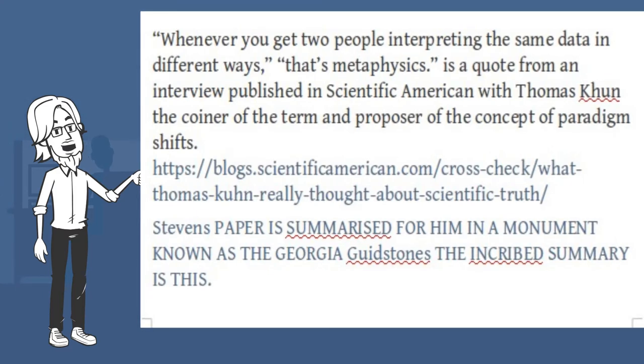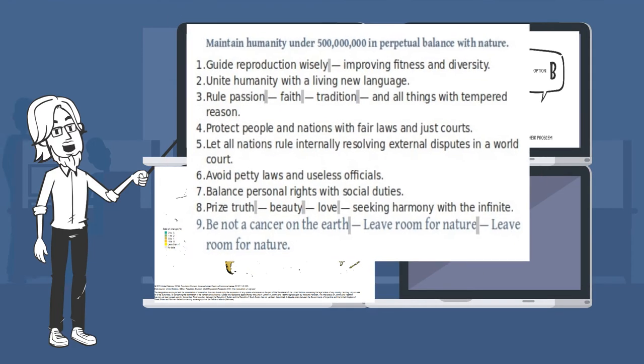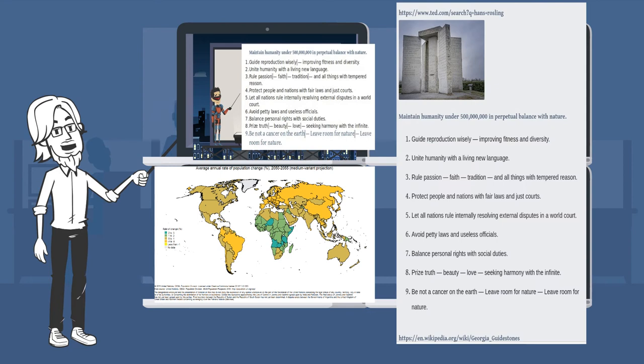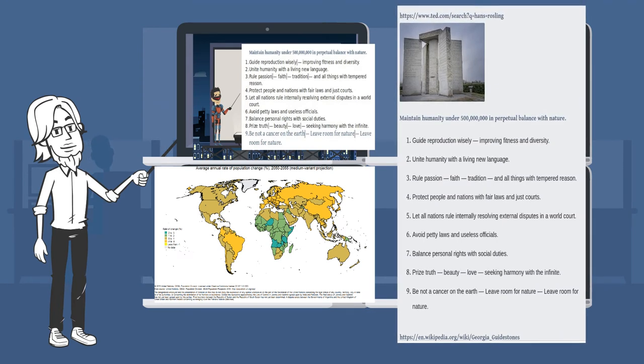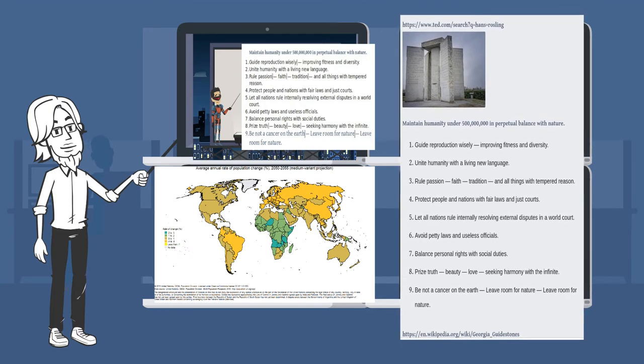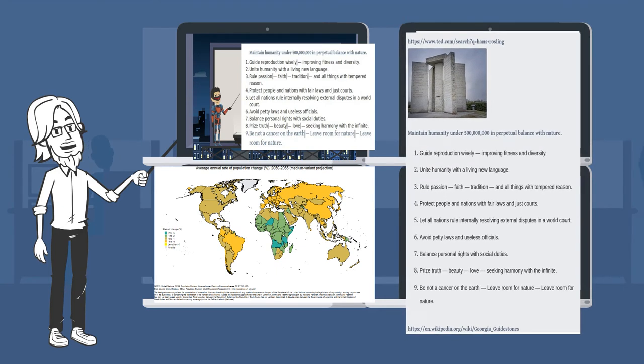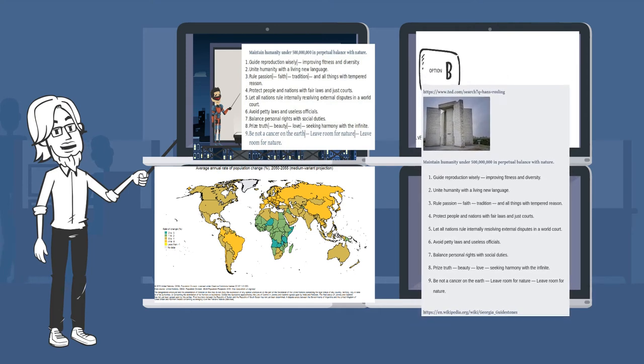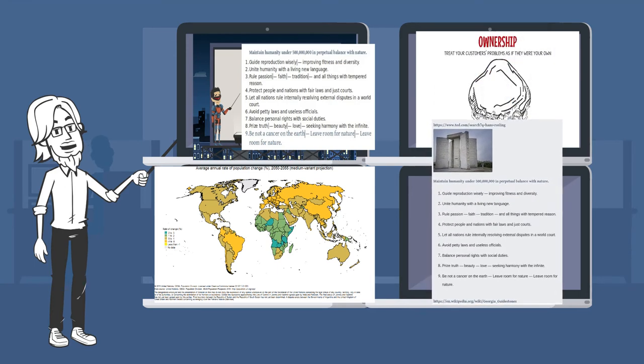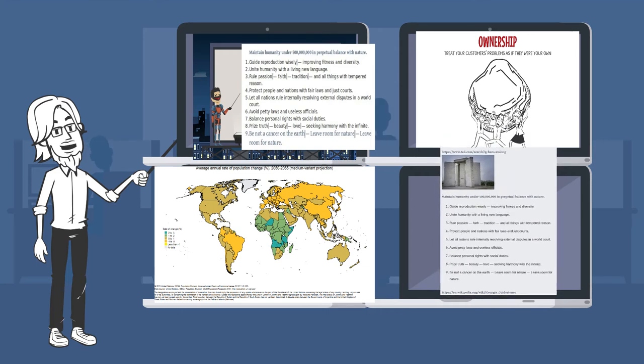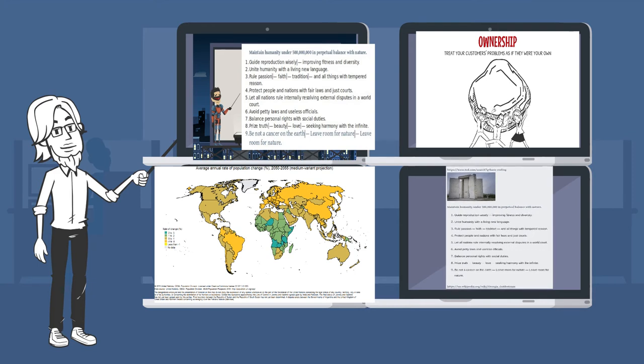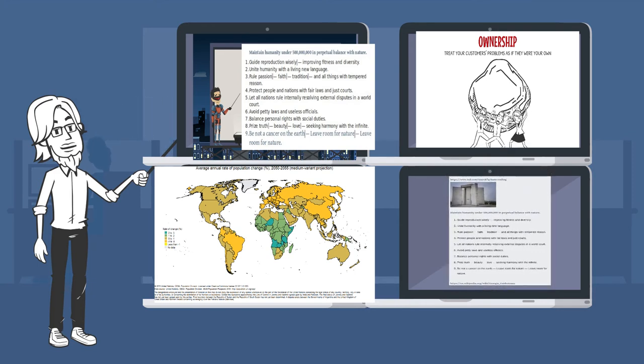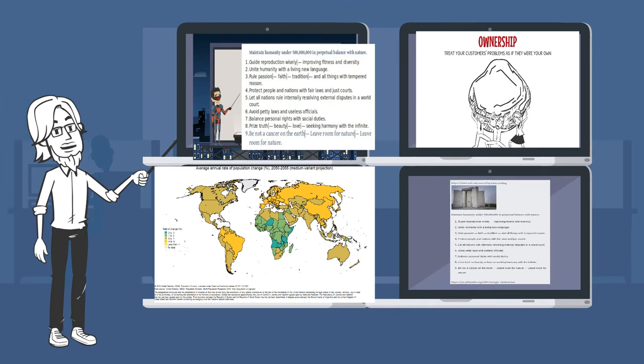Stephen's paper is summarized for him in a monument known as the Georgia Guidestones. The inscribed summary is this: Maintain humanity under 500 million in perpetual balance with nature. 1. Guide reproduction wisely, improving fitness and diversity. 2. Unite humanity with a living new language. 3. Rule passion, faith, tradition, and all things with tempered reason. 4. Protect people and nations with fair laws and just courts. 5. Let all nations rule internally, resolving external disputes in a world court. 6. Avoid petty laws and useless officials. 7. Balance personal rights with social duties. 8. Prize truth, beauty, love, seeking harmony with the infinite. 9. Be not a cancer on the earth, leave room for nature, leave room for nature.